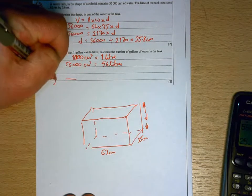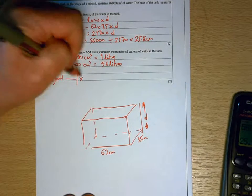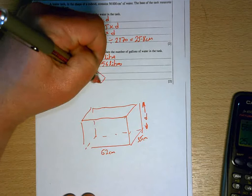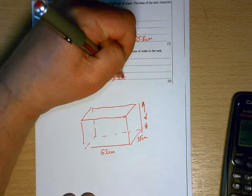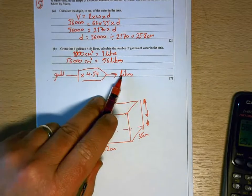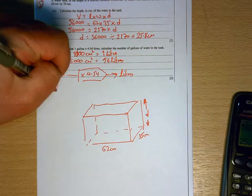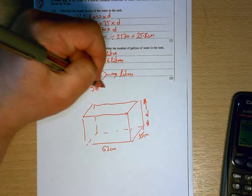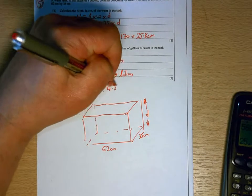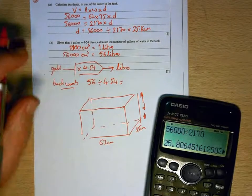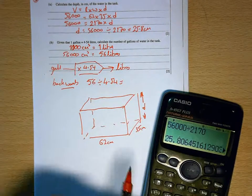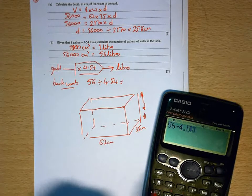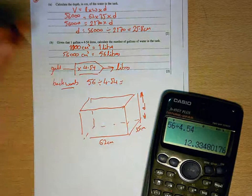So there are 56 liters in the tank. They're telling me here that gallons, if I multiply that by 4.54, that turns it into liters. So I need gallons, so I'm going to go backwards through my number machine. So I'm going to take my 56 liters, divide them by 4.54, and that will give me the number of gallons in the tank. So 56 divided by 4.54 is 12.3 gallons.